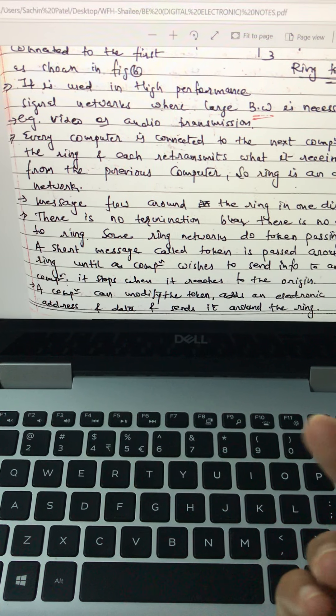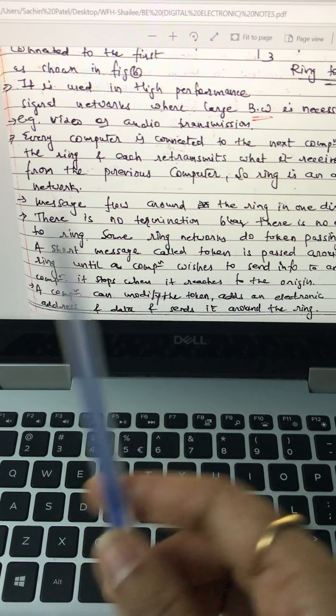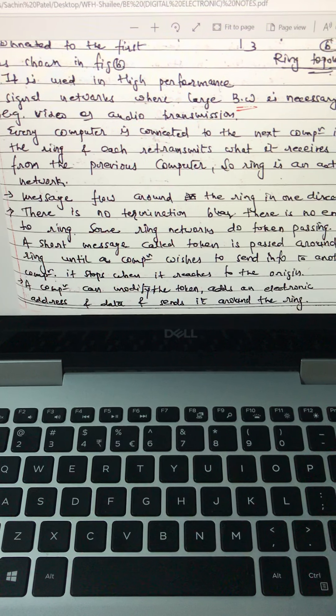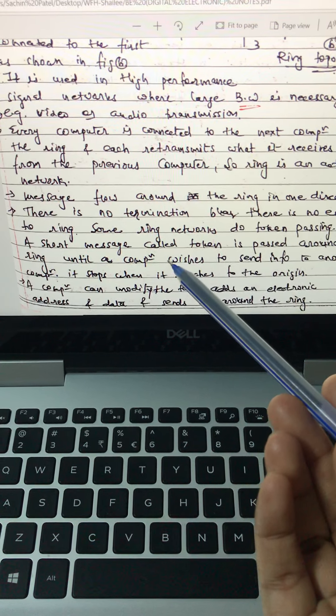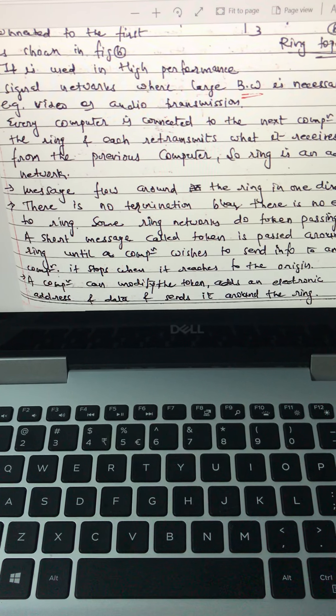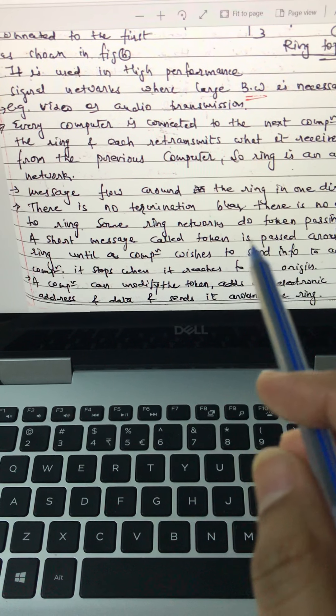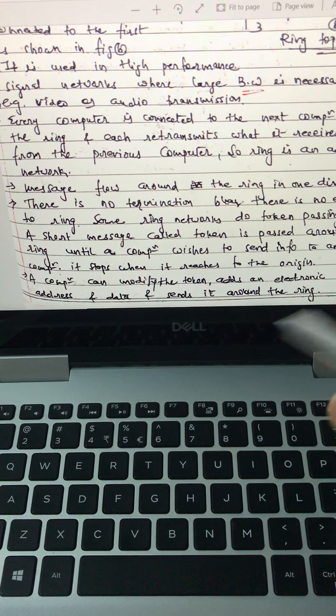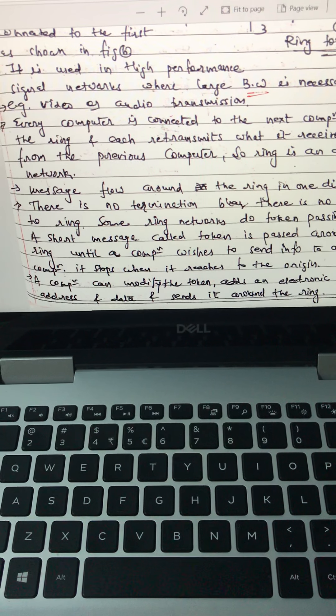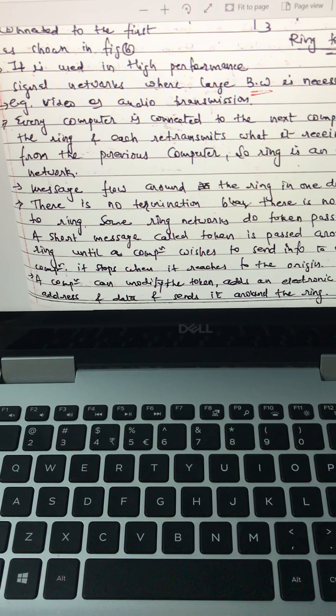And each retransmits what it receives from the previous computer. So ring is an active network because it has some connection with previous and front one. Message flows around the ring in one direction, clockwise or anticlockwise. There is no termination because there is no end to ring.